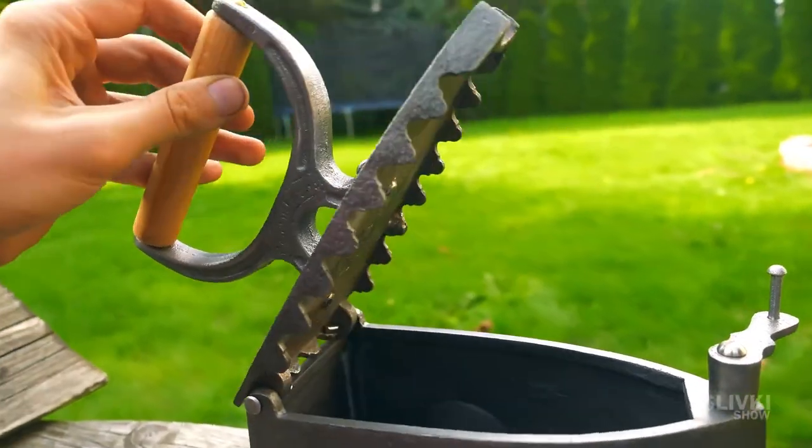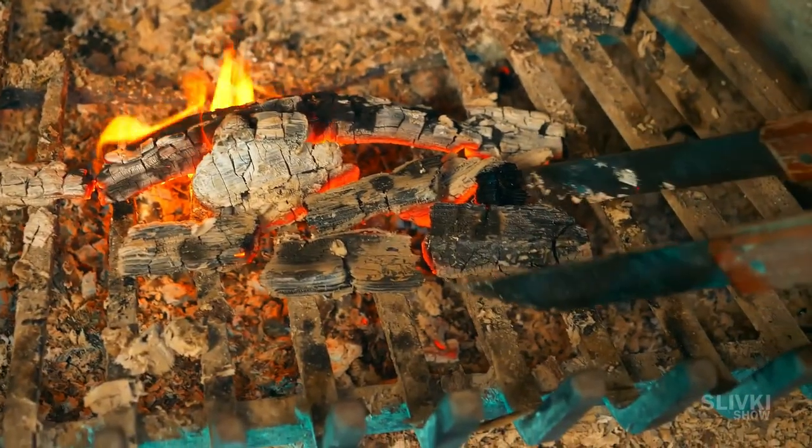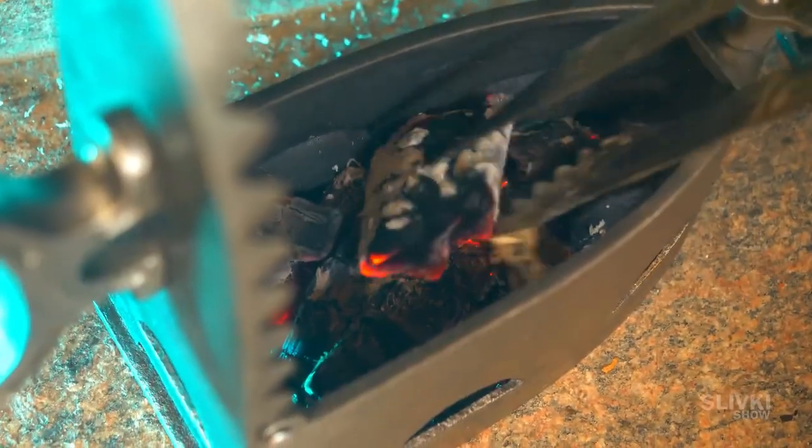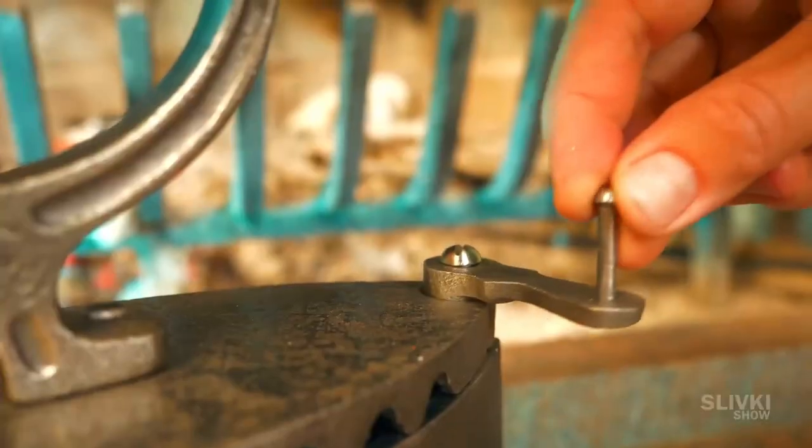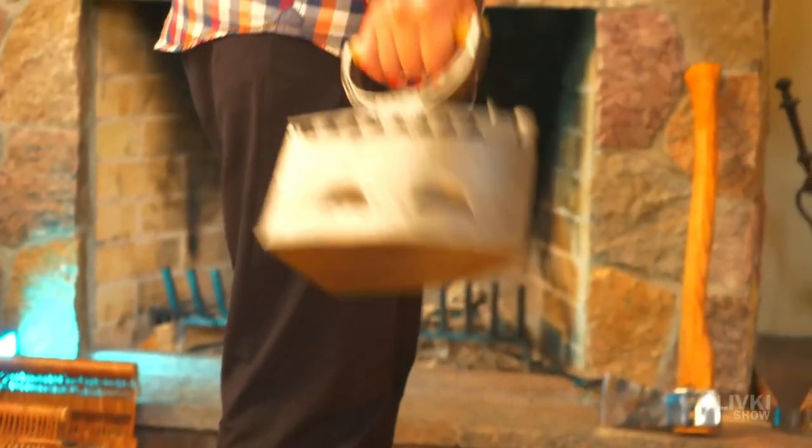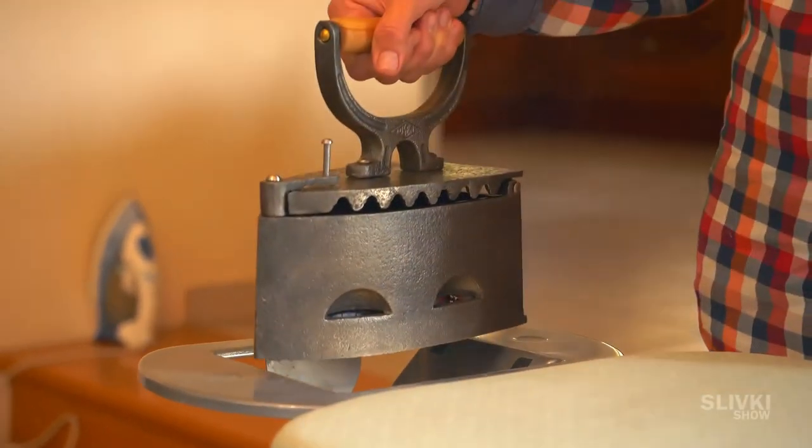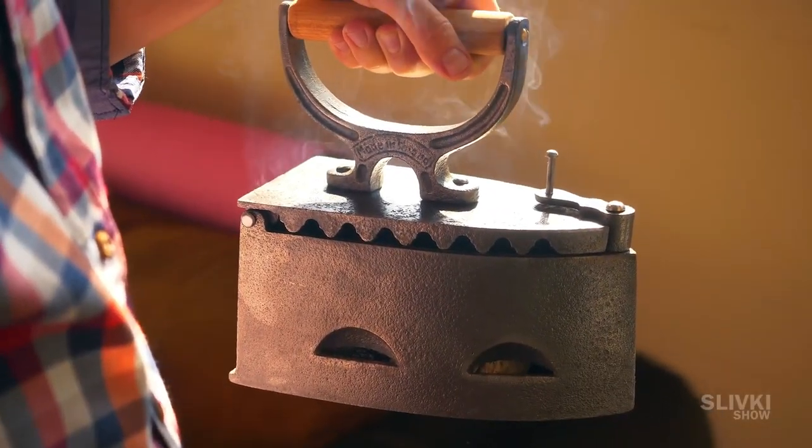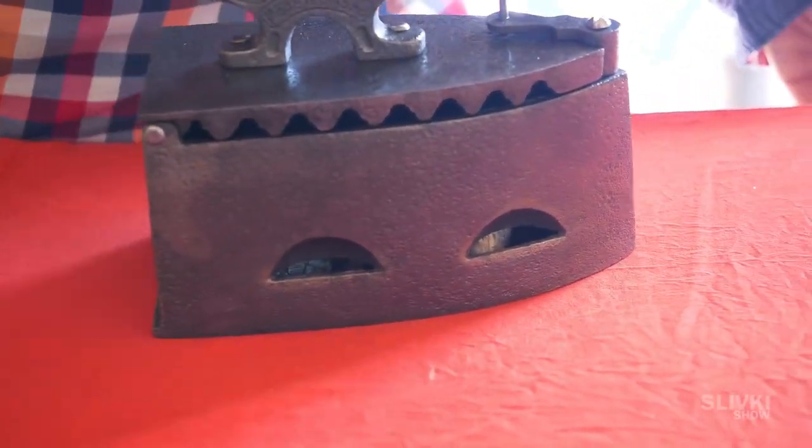And of course, we can't finish this off without a test. Let's build a fire. When the wood is burnt, we take the coals and put them inside the iron. I think we need to puff them up a little with this motion. We go to the ironing board and get my favorite t-shirt. The iron is hot enough as it is. And we start ironing like with a regular iron. Wow, do you see that?